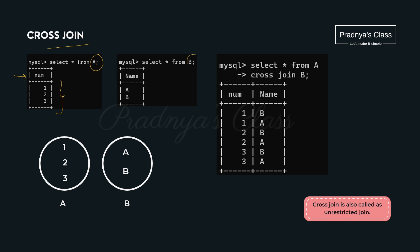The next table is B. Table B also has one field with some data. Now let's apply the cross join on these tables. We write the query: select star from A cross join B — we first mention table one and then table two.